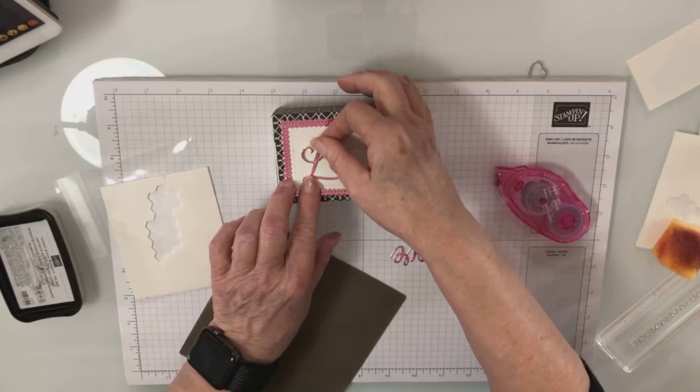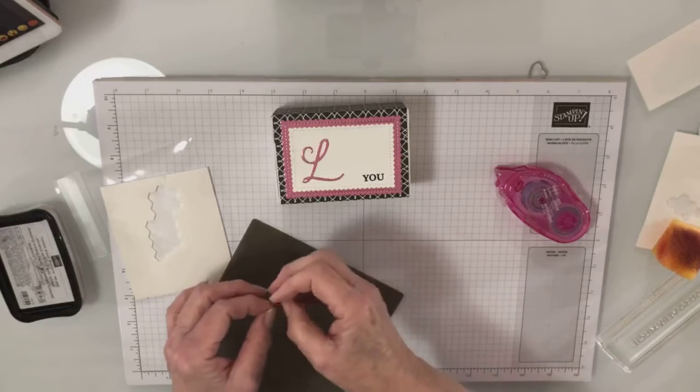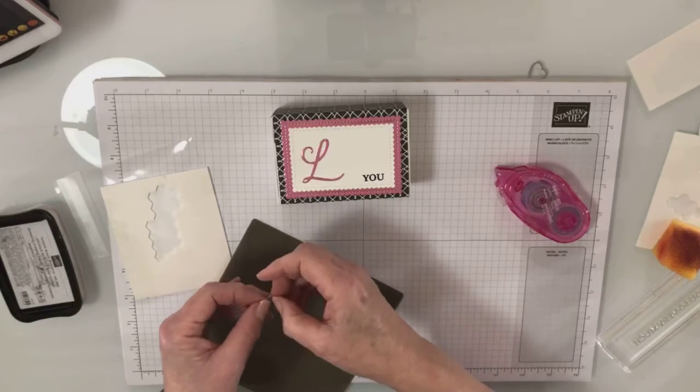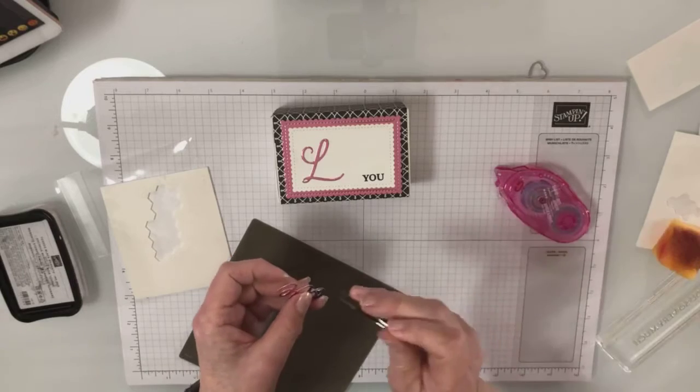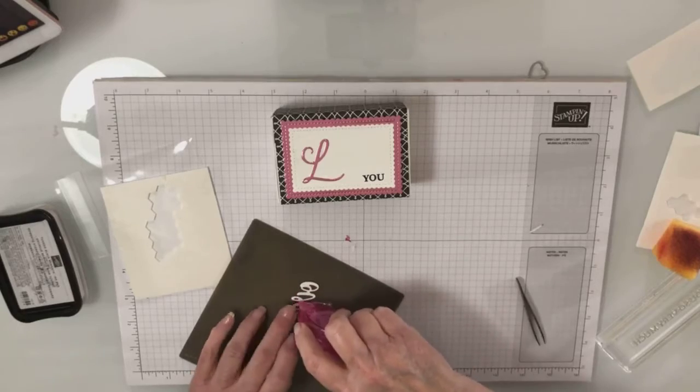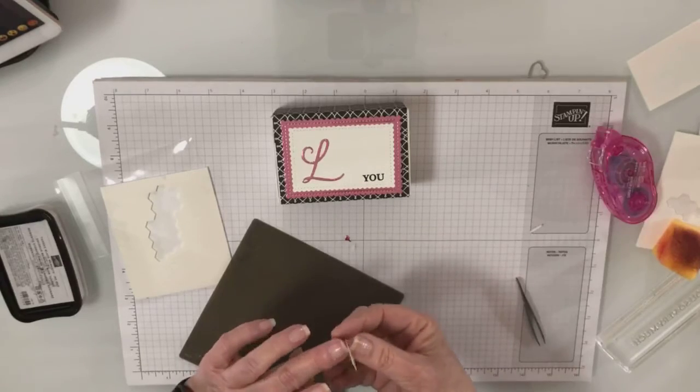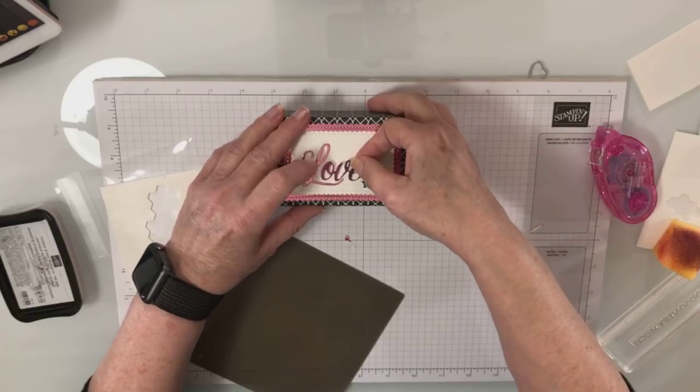This I'm going to put on with the dotted mono adhesive just because it's so easy to do, makes it super simple. Punch that little bit out. There we go. Same thing here, I'm just going to use the mono. If you don't have this dotted mono you can use a liquid glue.